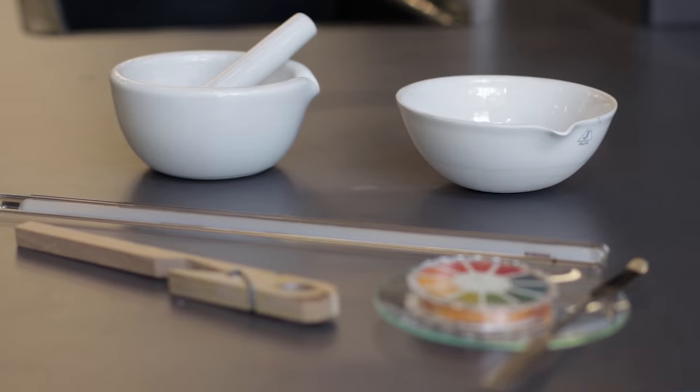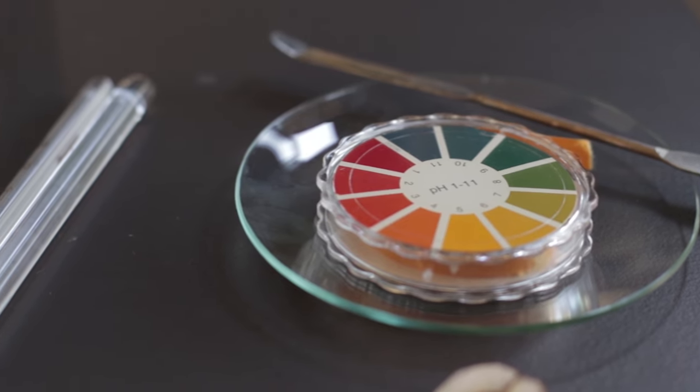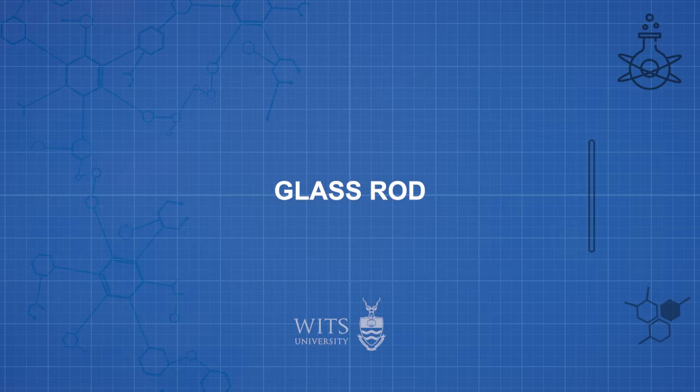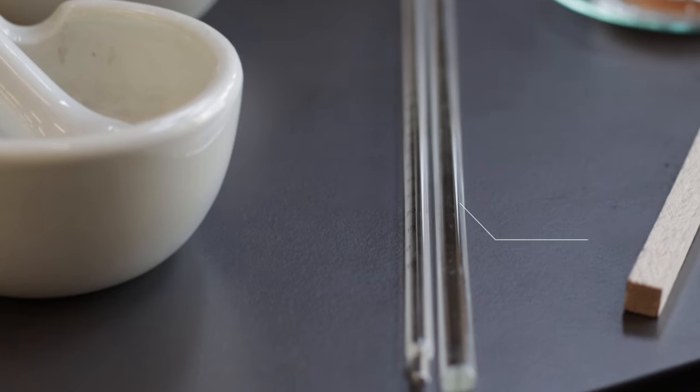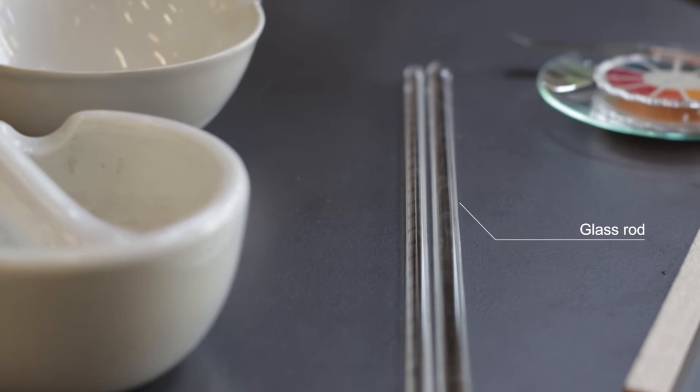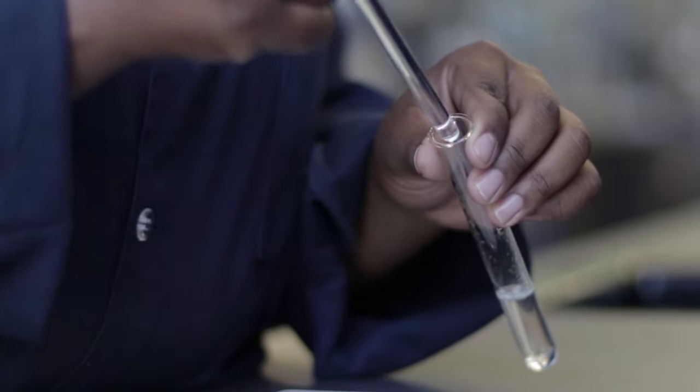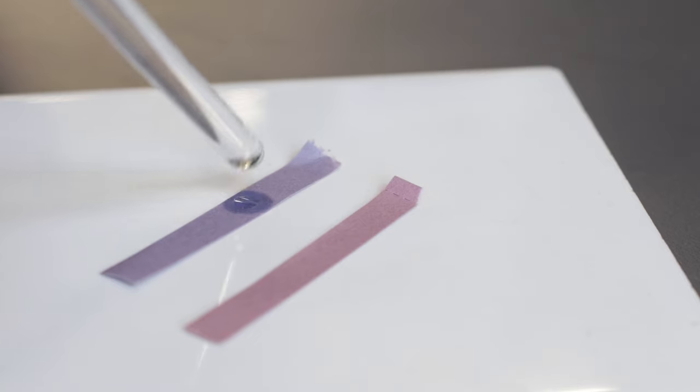These are other pieces of apparatus which you will use in your experimental practicals. A glass rod is used to mix chemicals and liquids and to dab litmus paper with solution to determine pH.